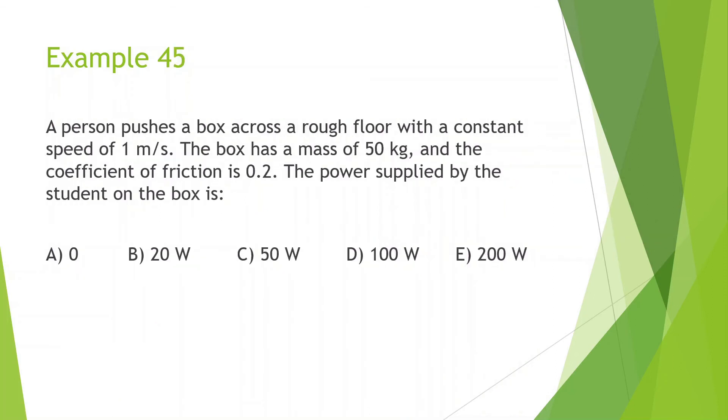Let's look at example 45. A person pushes a box across a rough floor with a constant speed of 1 meter per second. The box has a mass of 50 kilograms, and the coefficient of friction is 0.2. The power supplied by the student on the box is blank. So whenever you see constant speed and you see power, you should know that most likely we're going to use this formula: power is equal to force times velocity. But let's try to figure this out. So let's first draw a free body diagram. We have force of gravity, force normal, force applied, and force of friction. Something we should know is that the force applied and the force of friction are going to be the same because it's moving with a constant speed.